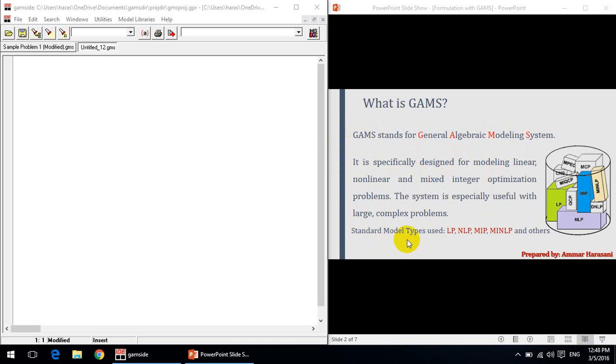First of all, let's start by what is GAMS? GAMS stands for General Algebraic Modeling System. It is specifically designed for modeling linear, non-linear, and mixed integer optimization problems. This system is especially useful with large complex problems. The standard model types used in this tutorial are linear programming, non-linear programming, mixed integer programming, mixed integer non-linear programming, and others.